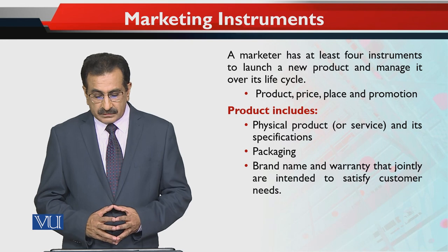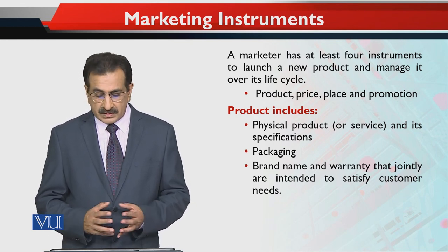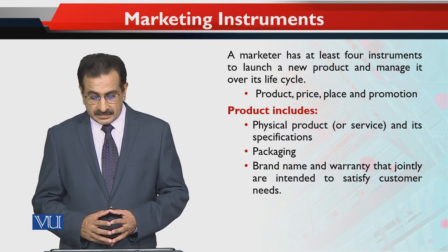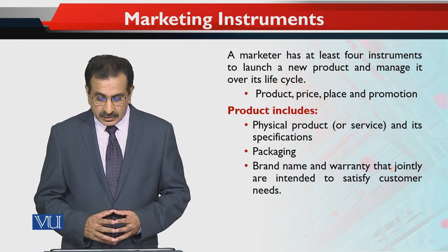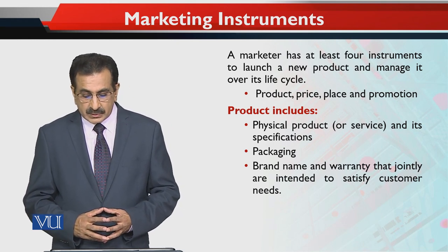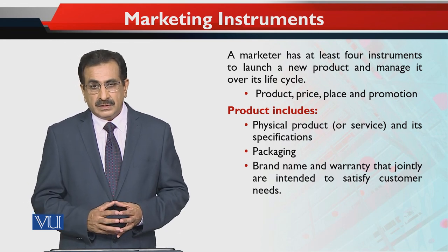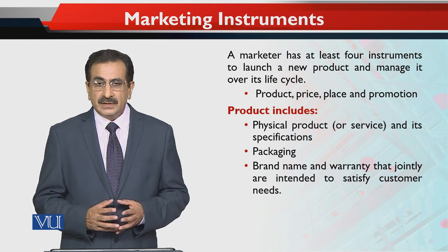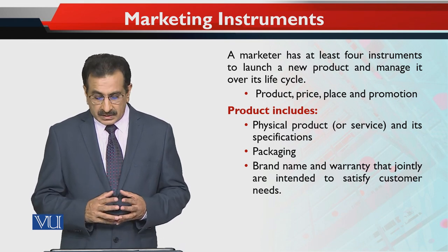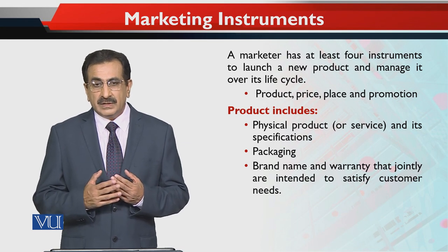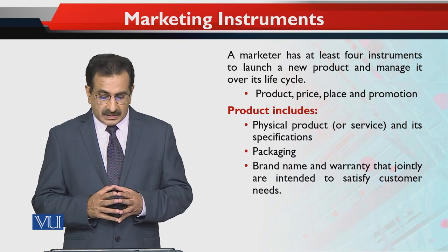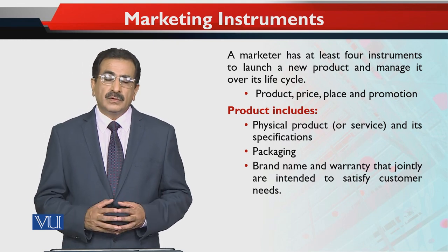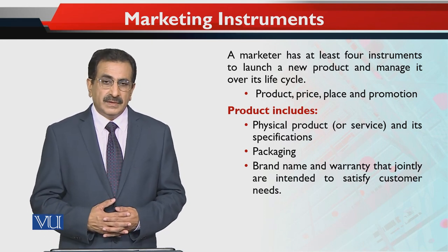Product includes a physical product or it can be a service, and its specifications — its key packaging, brand name, warranty — that jointly are intended to satisfy customer needs. Yeh saari cheezein — packing kaisi hai, appearance kaisi hai, brand name kaunsa hai, aur agar koi warranty or guarantees involved hain — yeh milke product banti hain jo customer ki kisi khaas requirements aur needs ko fulfill karti hai, and this is how it develops the customer value.